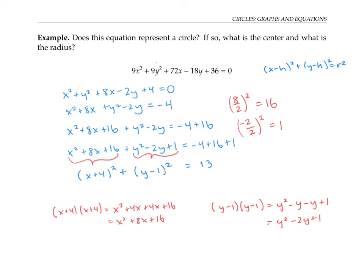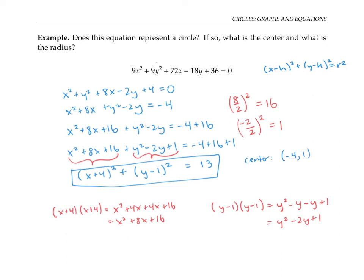If you're wondering how I knew to use four and negative one, the four comes from half of x's coefficient of eight, and the negative one is half of the negative two. Now we have an equation for a circle in standard form, and we can read off the center, which is negative four, one, and the radius, which is the square root of 13.